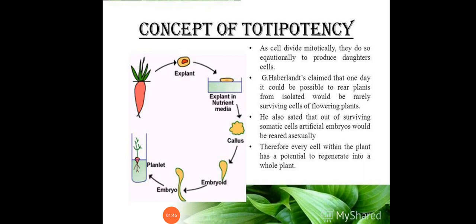The concept of totipotency or cellular totipotency was introduced by G. Haberland. The term totipotency was coined by Morgan in the year 1901 to denote the regeneration of an entire organism from single cells. Haberland claimed that one day it could be possible to rear plants from isolated cells of flowering plants.